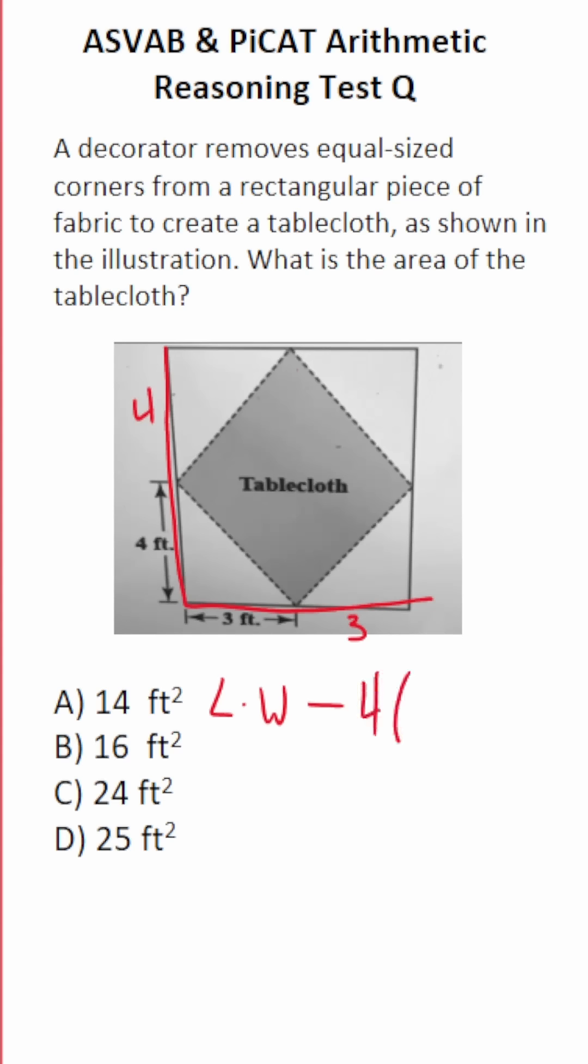Minus 4 times. What do we have in these corners? We have triangles. So if I find the area of one of these triangles and multiply it by 4 and subtract that, I'll know the area of the tablecloth. How do you find the area of a triangle?